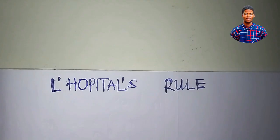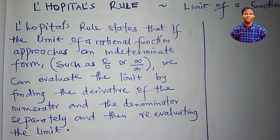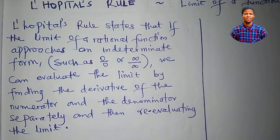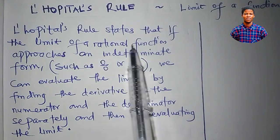Before we dive into solving problems to buttress the rule, let us see what the rule states. L'Hôpital's rule states that if the limit of a rational function approaches an indeterminate form — 0 over 0 or infinity over infinity — we can evaluate the limit of that rational function by finding the derivative of the numerator and the denominator separately and then re-evaluating the limits.